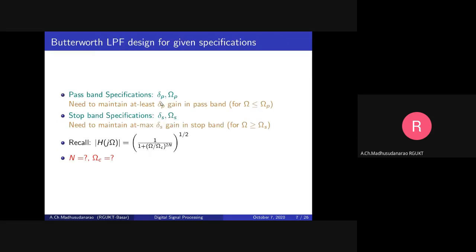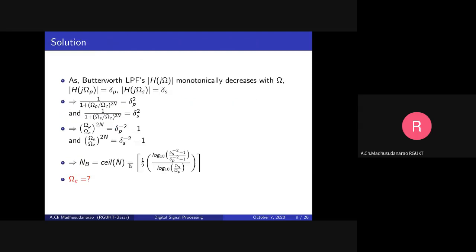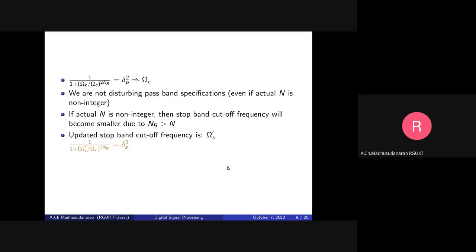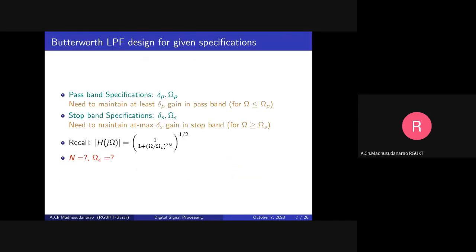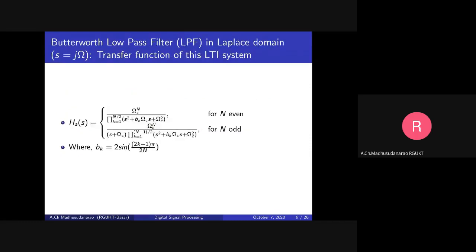With the help of these specifications we will try to find the concerned order n and omega_c using these expressions. Once we have the n value and omega_c, we can obtain the analog transfer function.